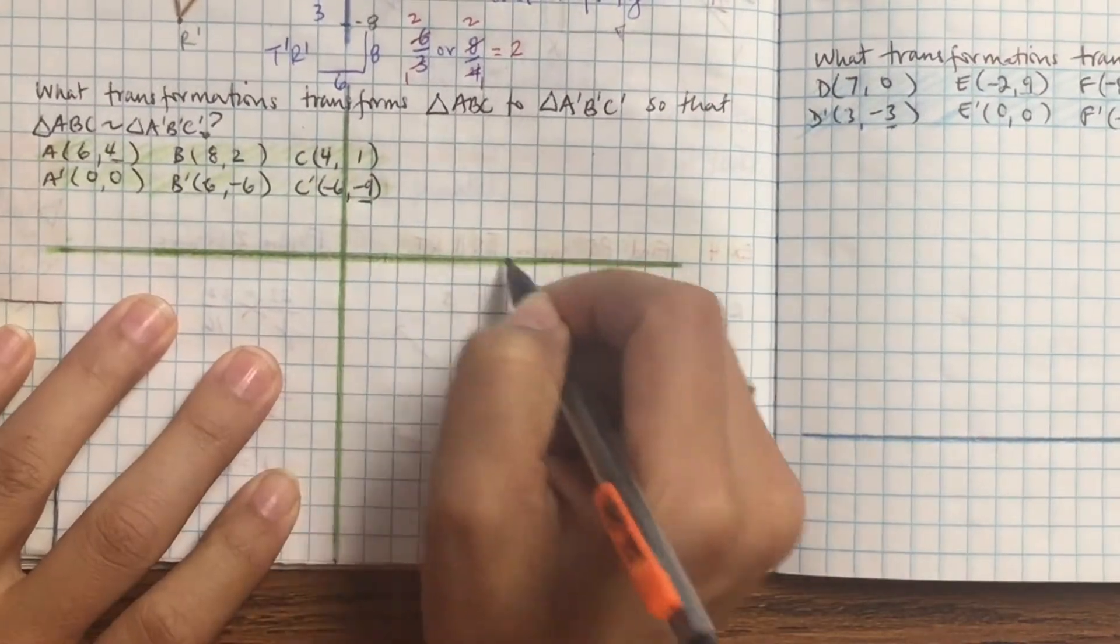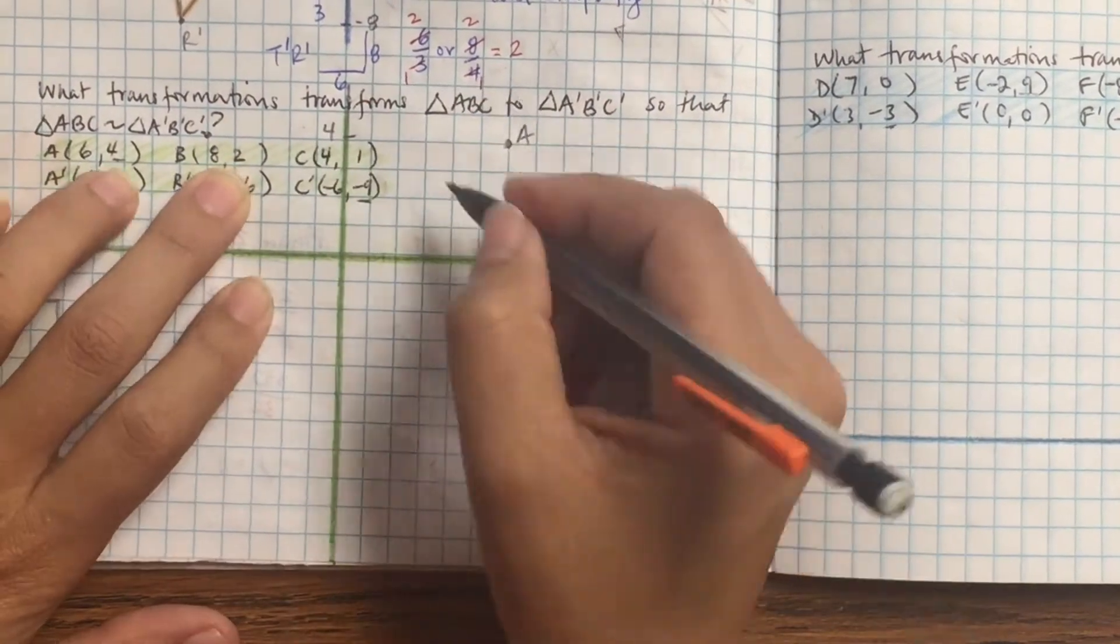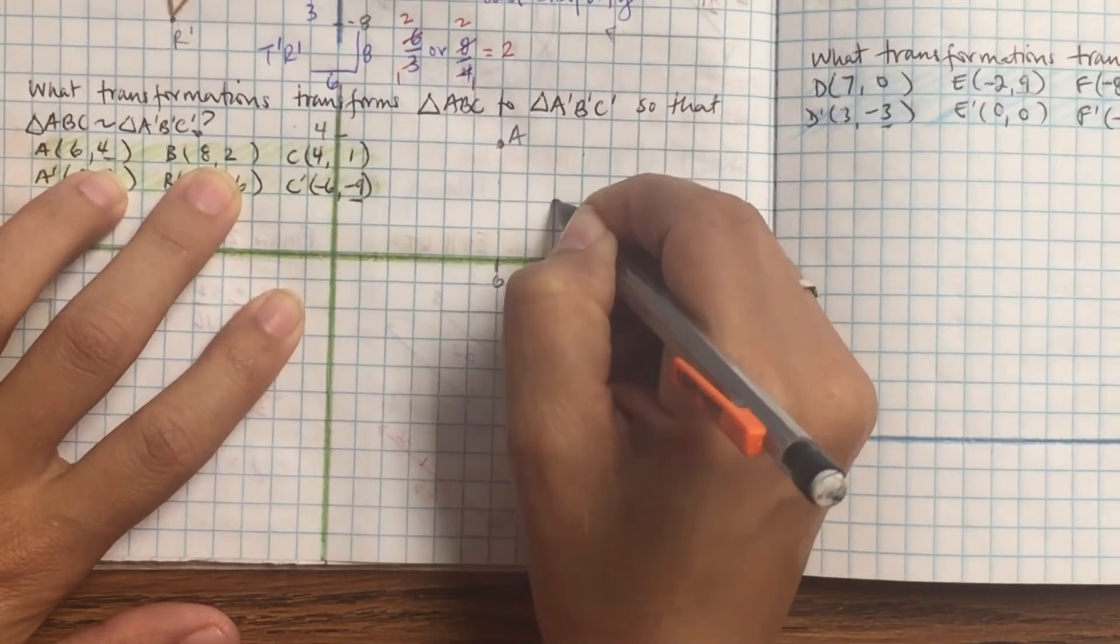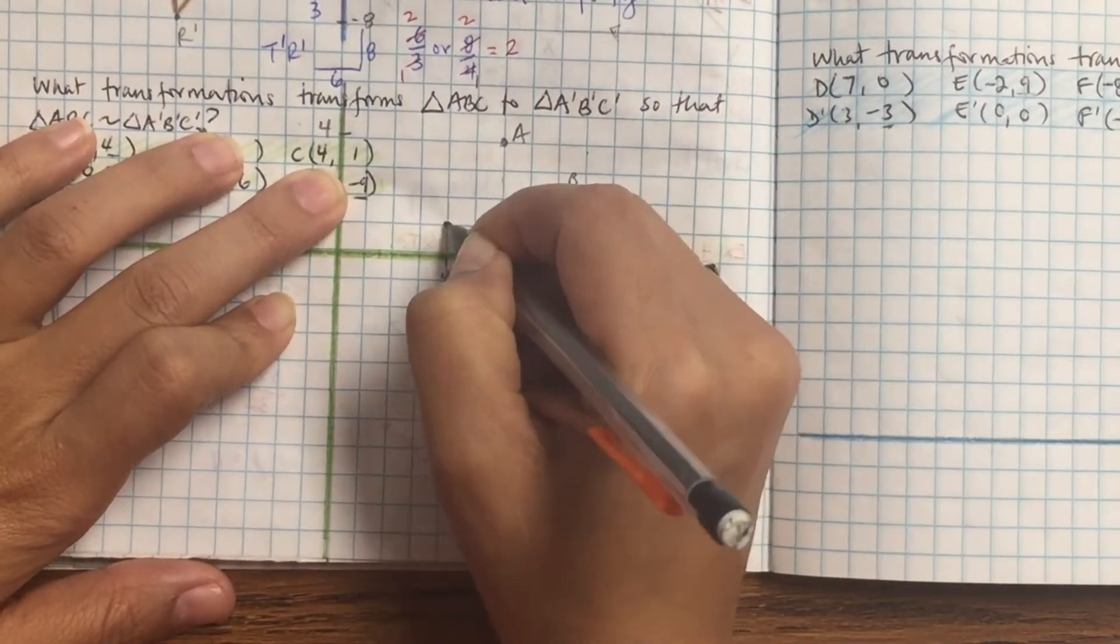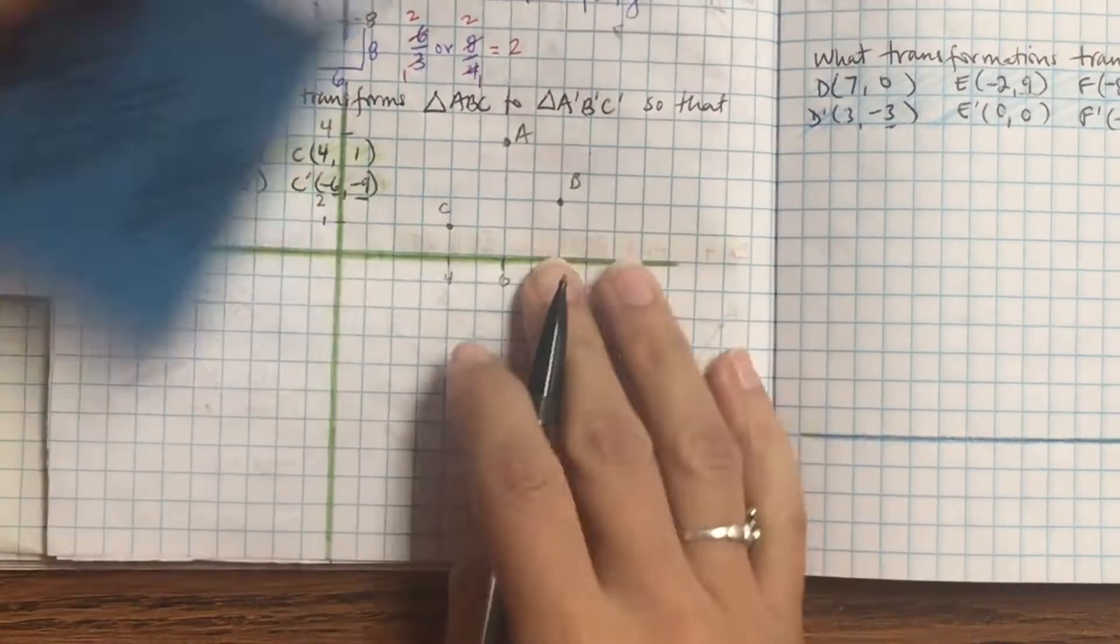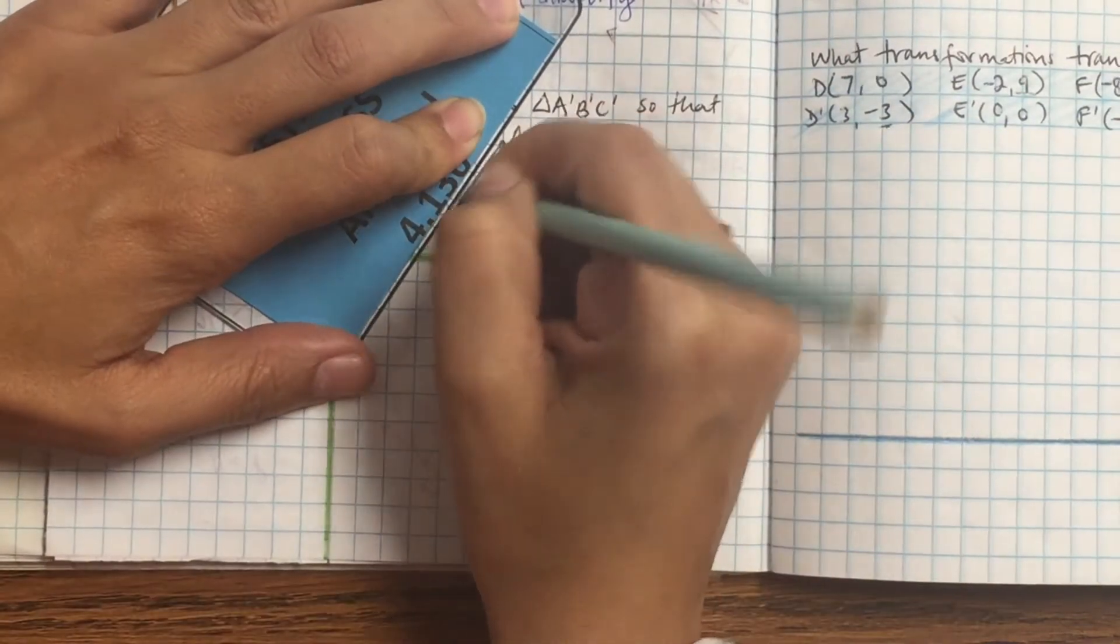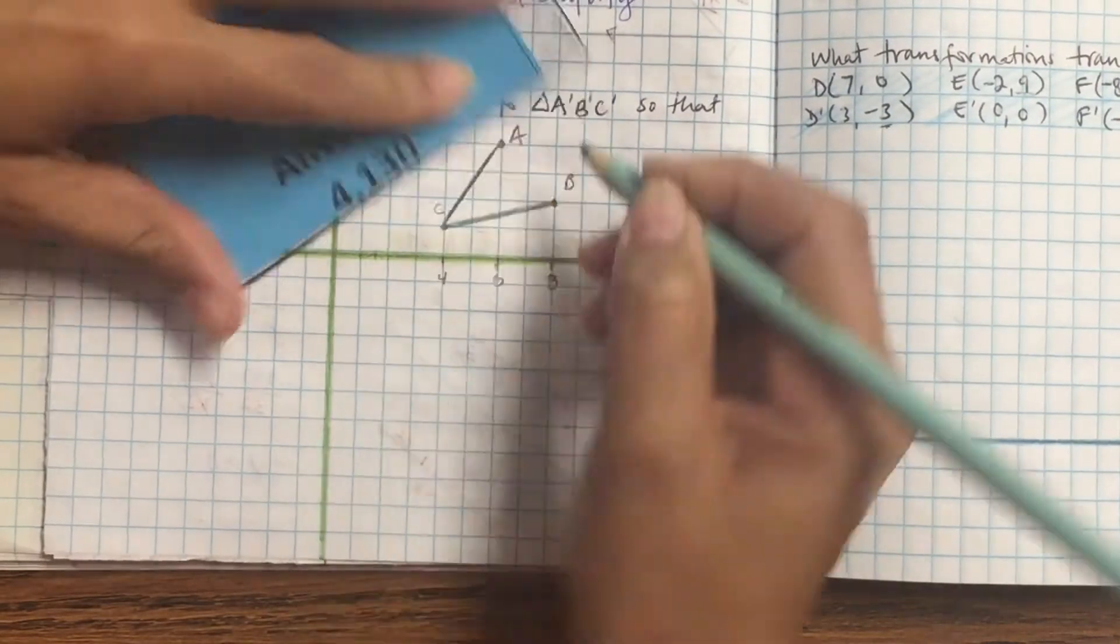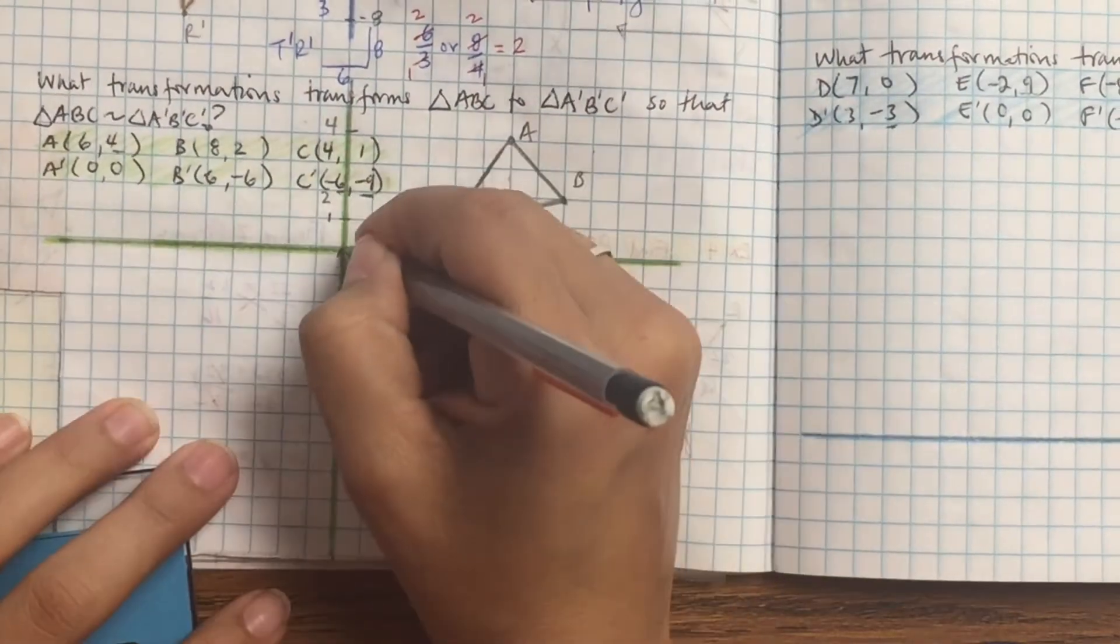Let's take a look at another question. What transformations move triangle ABC to A prime B prime C prime? Alright, so go ahead and plot all the points. So 6, 4, 8, 2, 4, 1. ABC, join the points together. The listening check, color in only the letter A of this triangle.